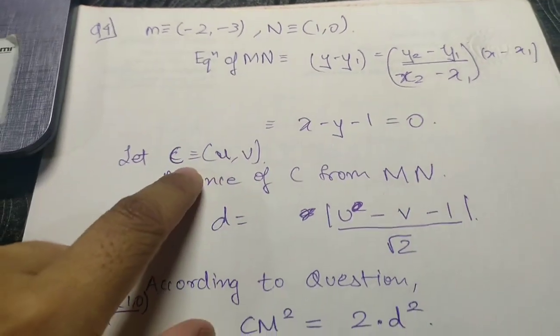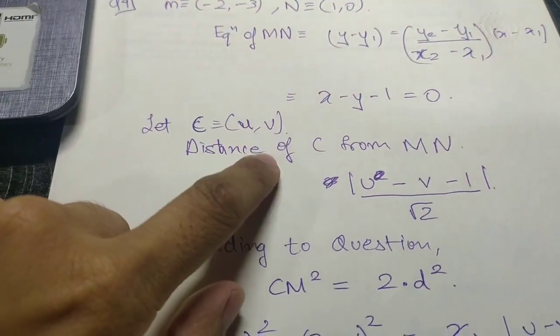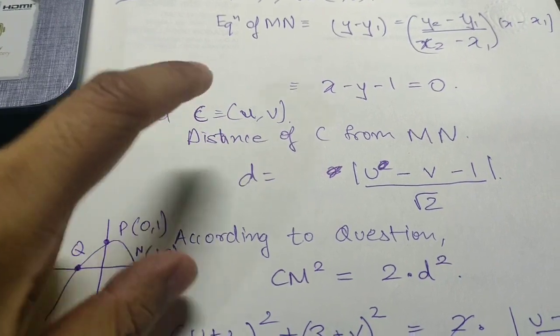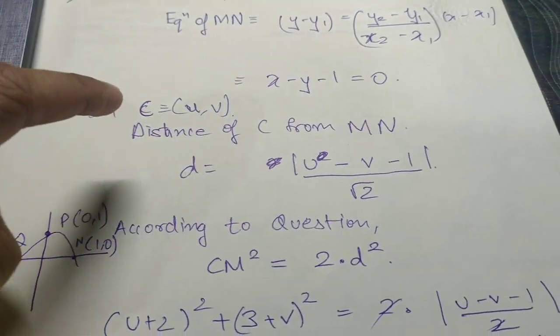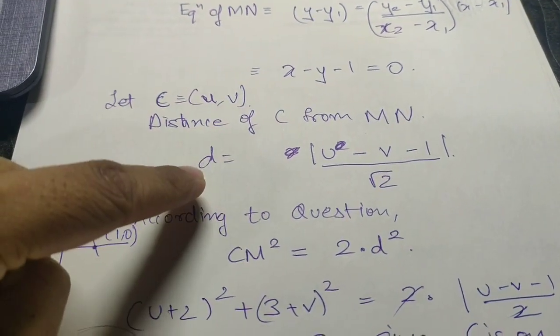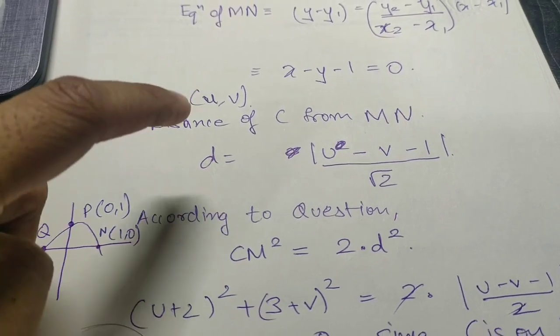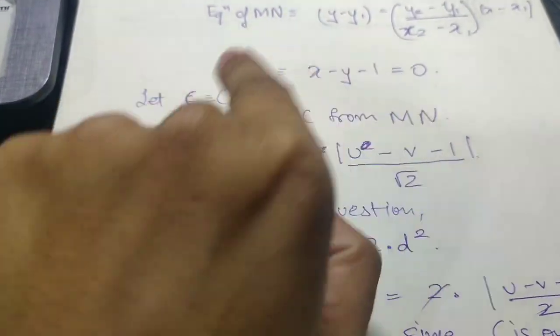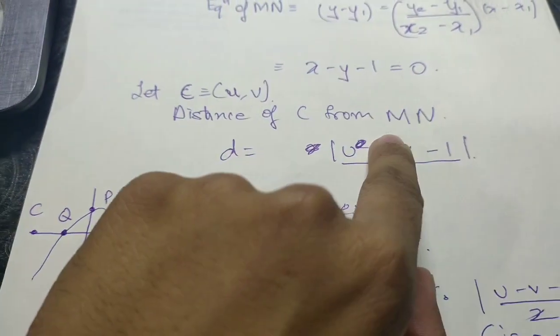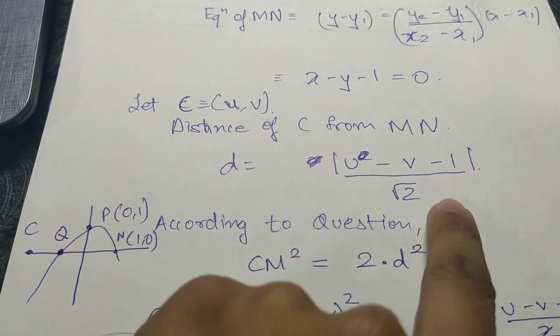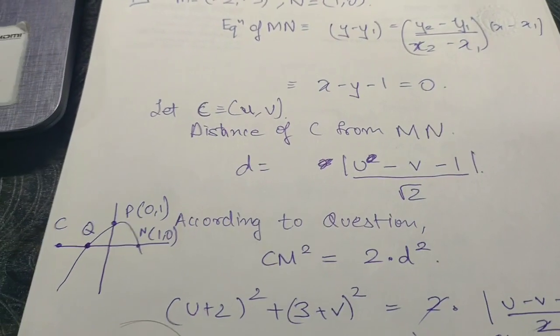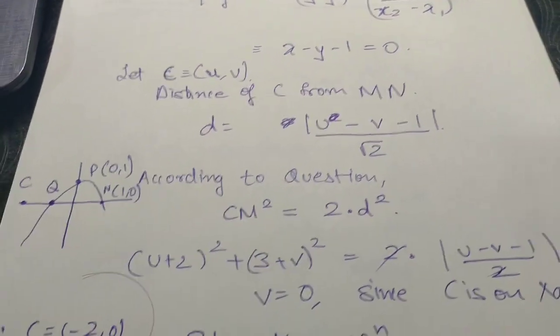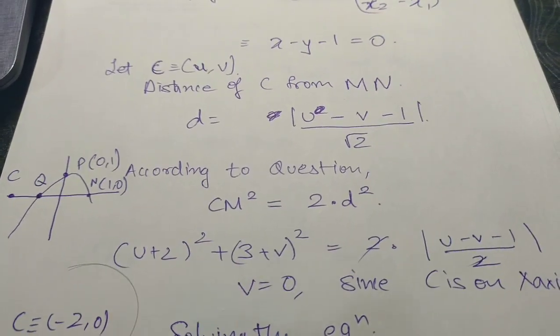Here we have C at (u, v). The distance of C from MN is equal to this, with the direct distance formula. Substituting C point in the equation of MN, we get this formula. According to the question, CM² = 2d².